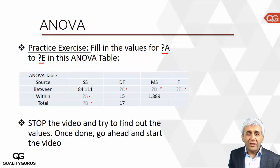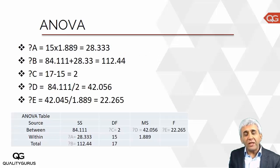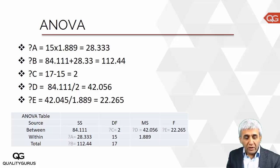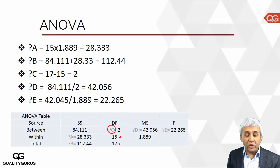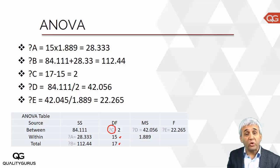Now let's look at the results and fill these missing values. Let's start with C. Since the total degrees of freedom was 17 and within was 15, it is easy to calculate between — because 2 plus 15 equals 17. So C equals 2; that was straightforward.